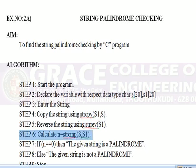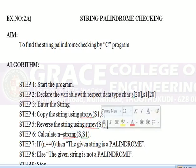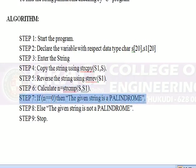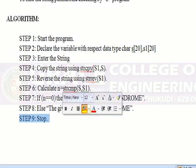Step 6: Calculate. M is equal to STRCMP, that is comparing S1 and S. Step 7: If N equals 0, then the given string is a palindrome. Else, the given string is not a palindrome. Then stop the program.